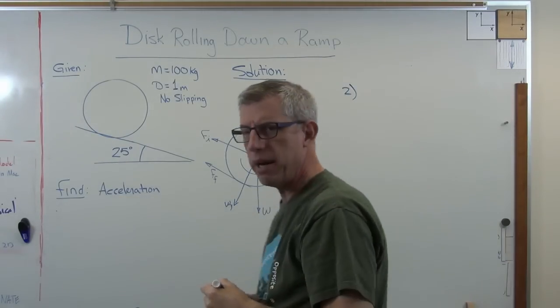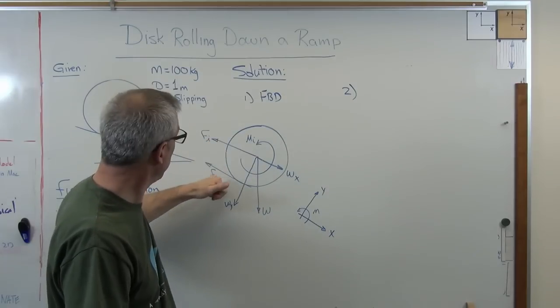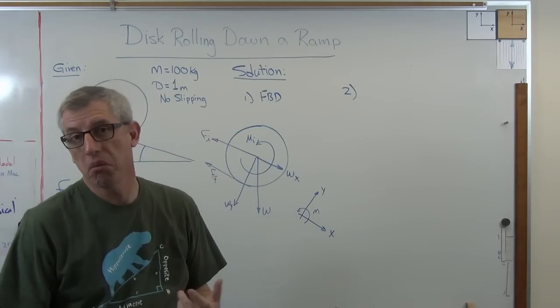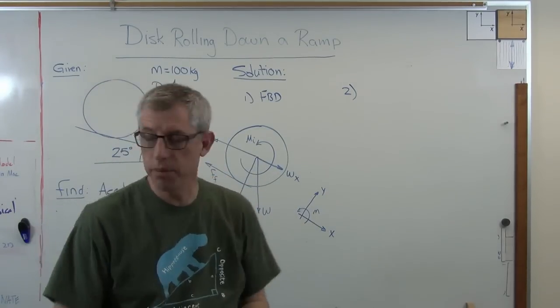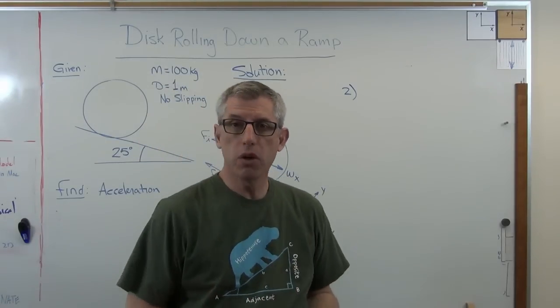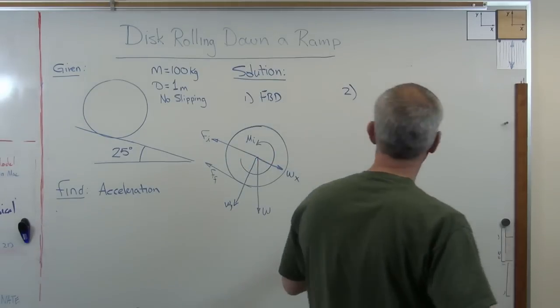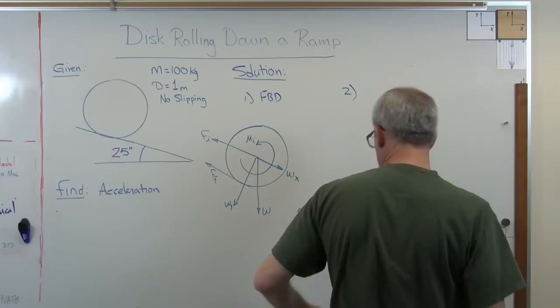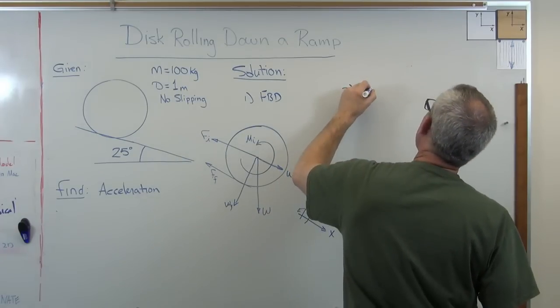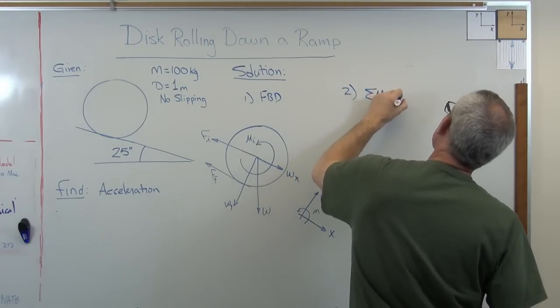Well, we can write out two equations. One of them is we can sum the forces in the X direction. We're going to have that friction force in there. Now, there's no reason we can't solve for it, but we don't need it. The problem doesn't ask for it. There's really no need to find friction force in this problem. So having done this a few times, I found out that if you sum the moments first, you can write one single equation that gives you everything you need.